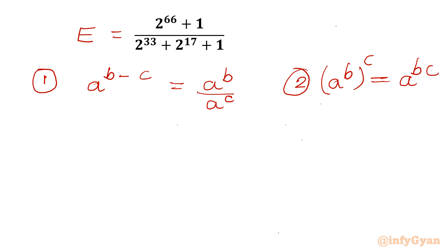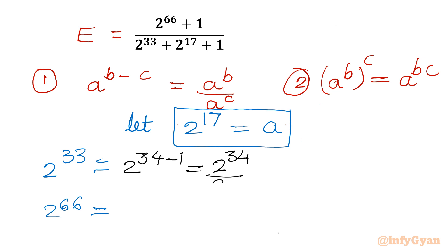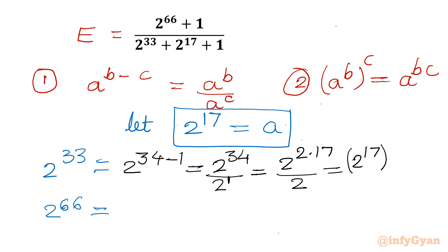I will use substitution, so let us consider 2^17 = a. Now I will write 2^33 and 2^66 in terms of a. So 2^33 = 2^(34−1) = 2^34 / 2^1 = 2^(2×17) / 2 = (2^17)² / 2 = a² / 2.